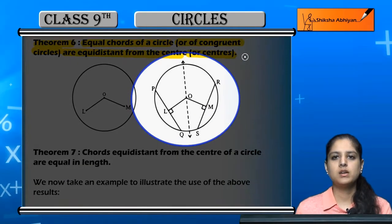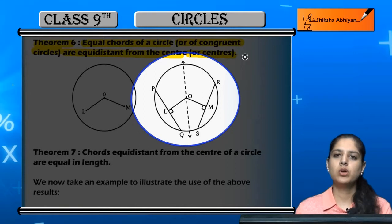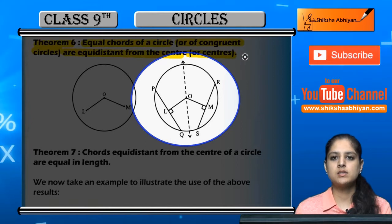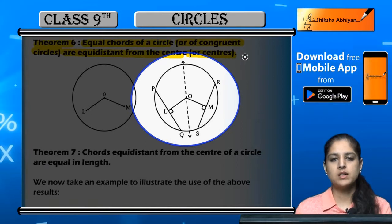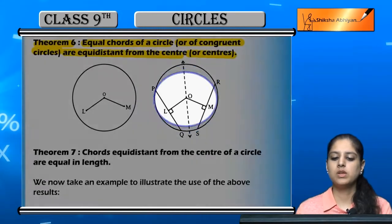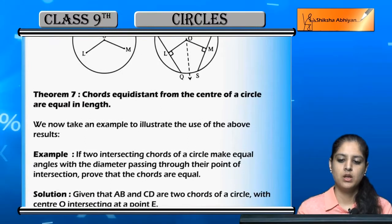If we consider one circle with chords PQ and RS, if these two chords are equal then OL (perpendicular distance from center to PQ) and OM (perpendicular distance from center to RS) will be equal. This is what theorem number six states. Now theorem number seven.